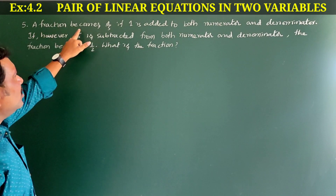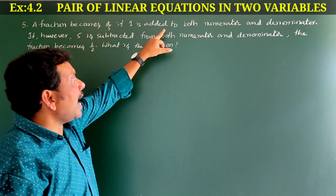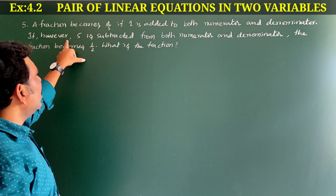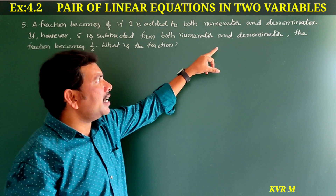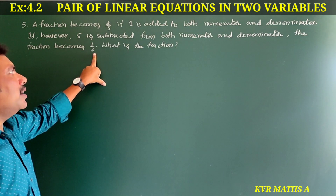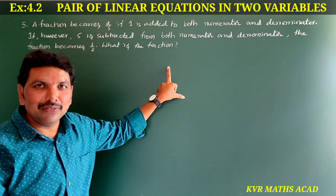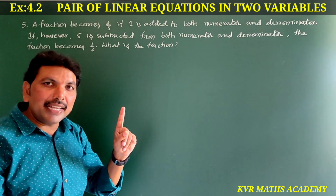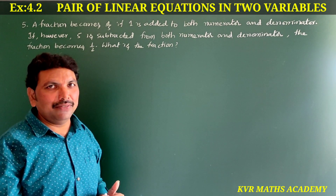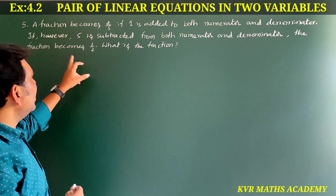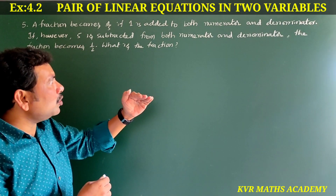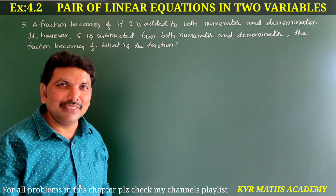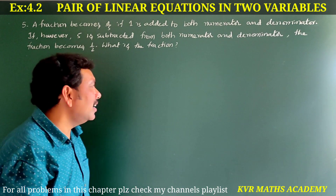Fifth question: A fraction becomes 4 by 5 if 1 is added to both numerator and denominator. If however 5 is subtracted from both numerator and denominator, the fraction becomes 1 by 2. What is the fraction? Let us solve.